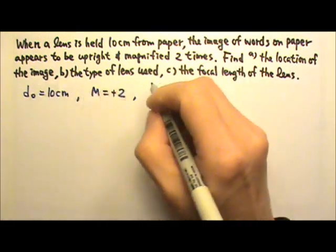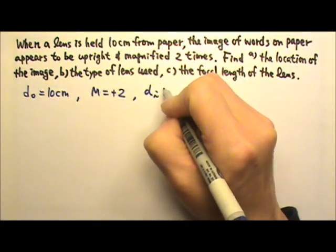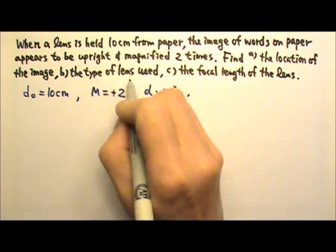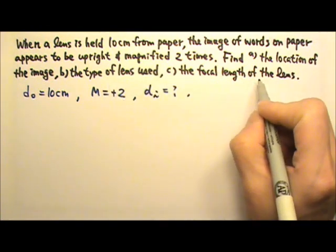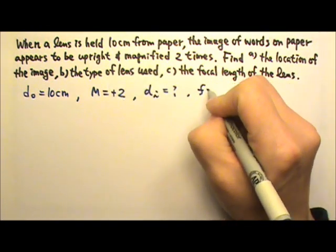And we want to find the location of the image, which means we're looking for DI. The type of lens used and the focal length of the lens means we're looking for the F.